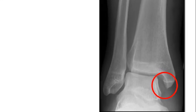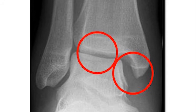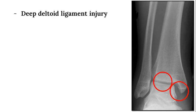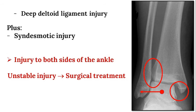While no obvious fracture is present on these x-rays, the medial clear space is significantly wider than the superior clear space, indicating a deep deltoid ligament injury. Additionally, the tibiofibular overlap is decreased while the tibiofibular clear space is increased, indicative of a syndesmotic injury. The x-ray demonstrates lateral translation of the talus within the tibial plafond. Given the lateral and medial sided injuries, this is unstable and requires surgery.